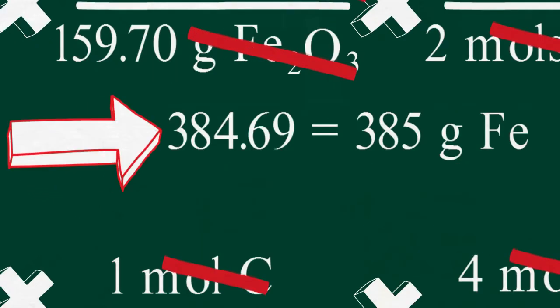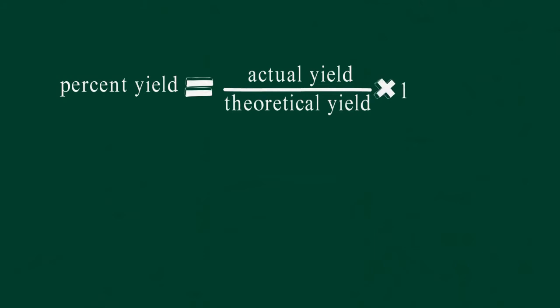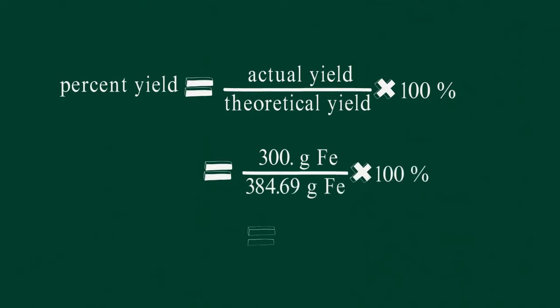Now we can move on to the percent yield. The formula for percent yield is the actual yield divided by the theoretical yield, multiplied by 100. Remember to use your non-rounded mass of iron in the calculation. The percent yield of this reaction is 77.9%.